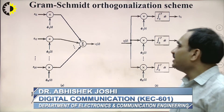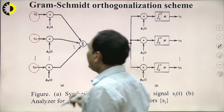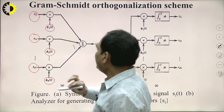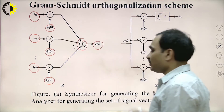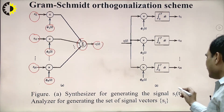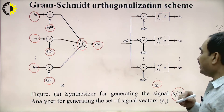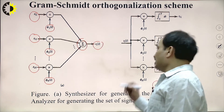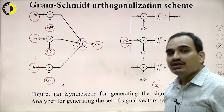Here we have signals given by s₁ᵢ, s₁ᵢ₂, up to s₁ₙ, and these are the orthonormal basis functions given by φ₁(t), φ₂(t) up to φₙ(t). We are multiplying these orthonormal basis functions, summing them, and transmitting from the transmitter. This is the concept of the general modulator — a synthesizer for generating the signal s₁ᵢ(t).